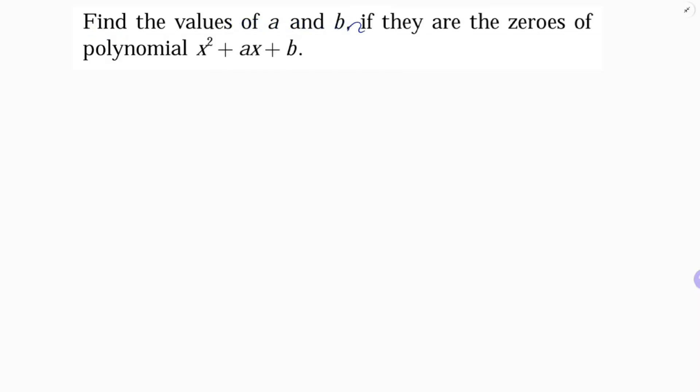Find the values of a and b if they are the zeros of the polynomial x square plus ax plus b. See, this question is interesting - here a and b are only the zeros.